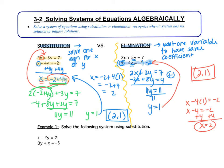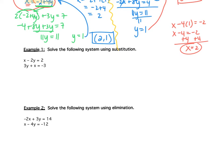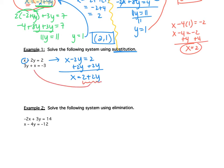That is the gist of solving systems algebraically. You will need to know both methods. Sometimes I will tell you a specific method to use; sometimes I will allow you to choose. We've got a few more examples to look at. Example 1 — we are going to solve this one using substitution. We need to solve one of the equations for x or y and substitute into the other. In the top equation, I can solve for x really easily. Adding 2y to both sides, I get x equals 2 plus 2y. Now I need to substitute into the other equation.